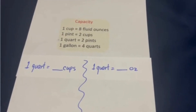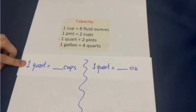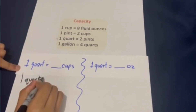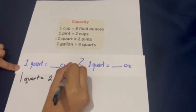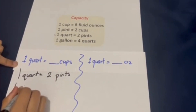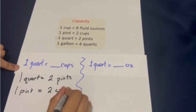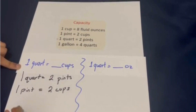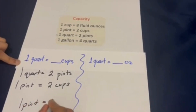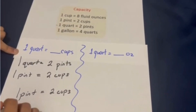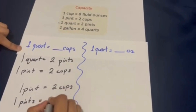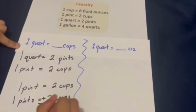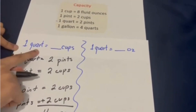Now we're going to convert quarts to cups and quarts to ounces. I'm going to start by converting one quart into cups. What we know is that one quart is equal to two pints. We also know that one pint is equivalent to two cups. So we're going to need to do two cups plus two cups, because one pint is equal to two cups. The other pint is also equal to two cups — two cups plus two cups — which is, in total, four cups. Meaning that one quart is equivalent to four cups.